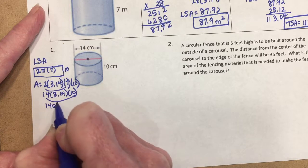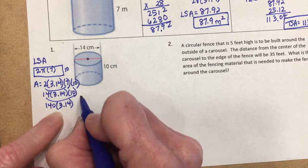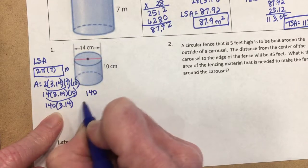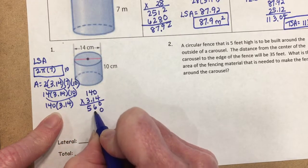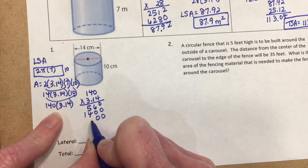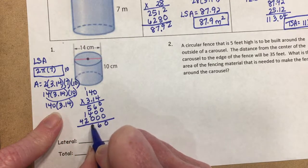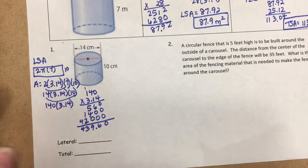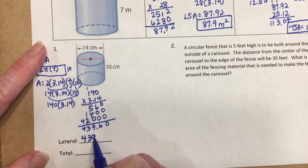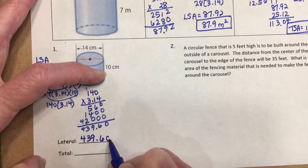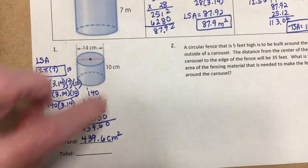Simplify: 2 times 7 is 14, times 10 is 140, times 3.14 equals 439.6. Rounded to the nearest tenth, the lateral surface area is 439.6 square centimeters.